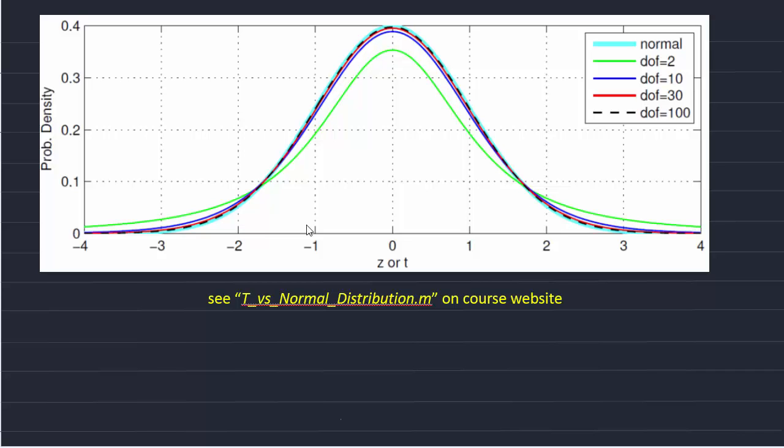Again, illustrating that for low degrees of freedom, say less than 30, it's better to use the t-distribution when estimating the population mean. Whereas for larger degrees of freedom, or therefore larger n, a normal distribution is appropriate.